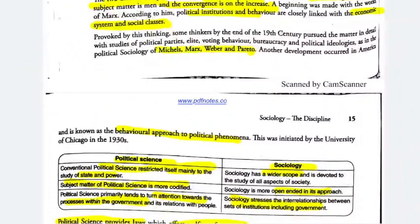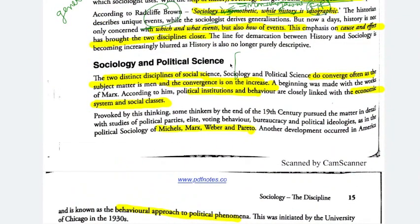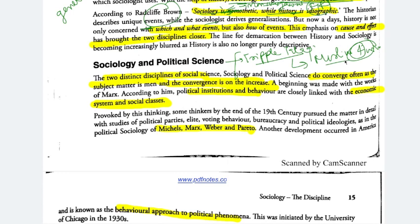Now, sociology and political science. For example, the triple talaq issue — some Muslim men were misusing multiple marriages and their wives complained. The government took up the triple talaq divorce issue. What is divorce? It is related to your marriage institution — society. But which law was made? By a political institution. This is their relation: a political institution is making laws that impact your social institution.